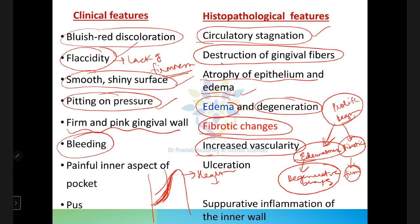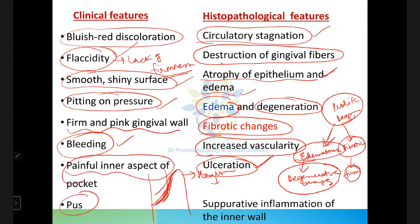Bleeding occurs due to increased vascularity — blood vessels dilate and increase in size. Atrophy of the epithelium exposes the connective tissue, causing ulceration, which makes the inner aspect of the pocket painful. Sometimes pus may be expressed when digital pressure is applied.